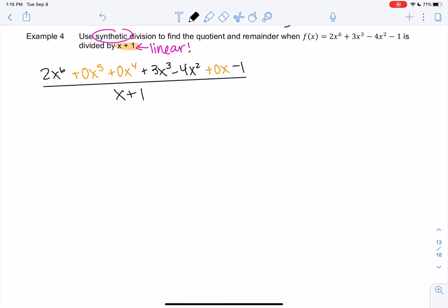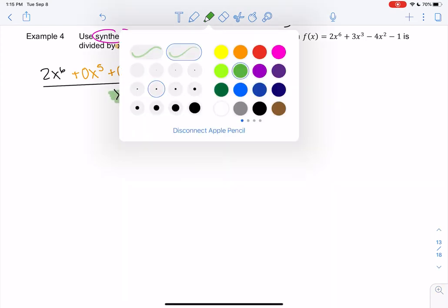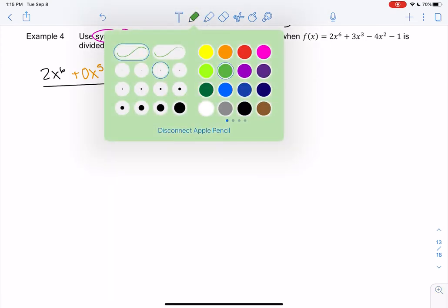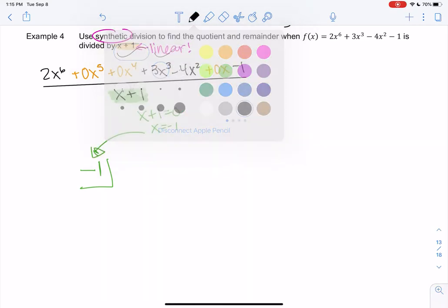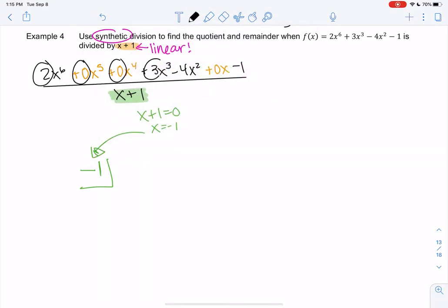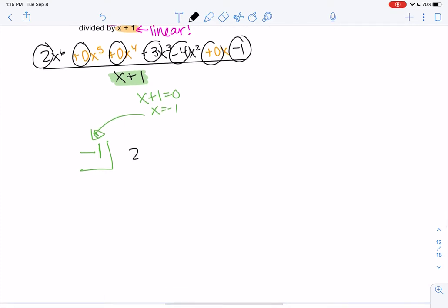So let's set it up. So on the outside will be a negative 1, because x plus 1 equals 0 when x equals negative 1. So the 0 is what goes on the outside. And then all these constants go on the inside.